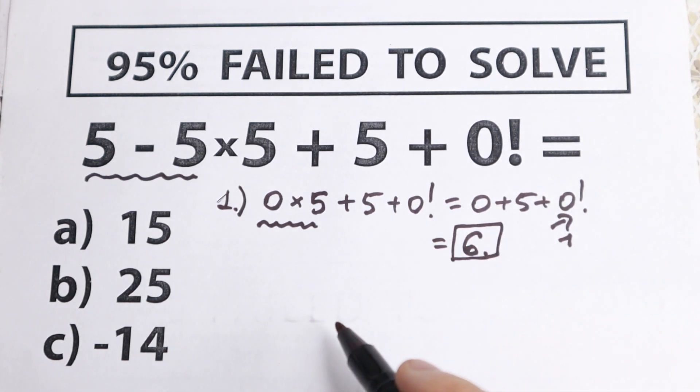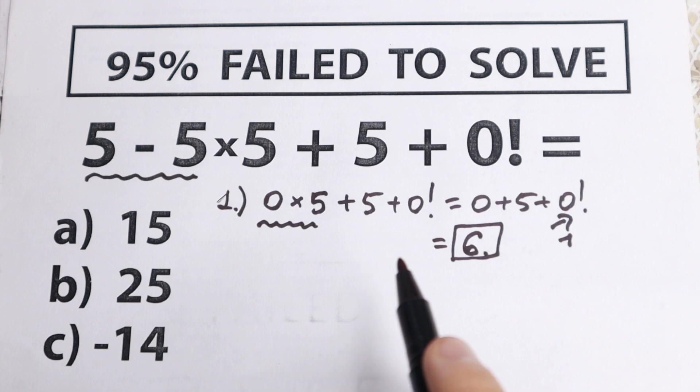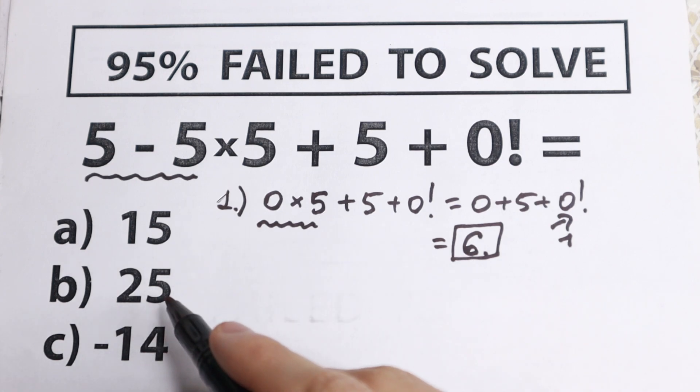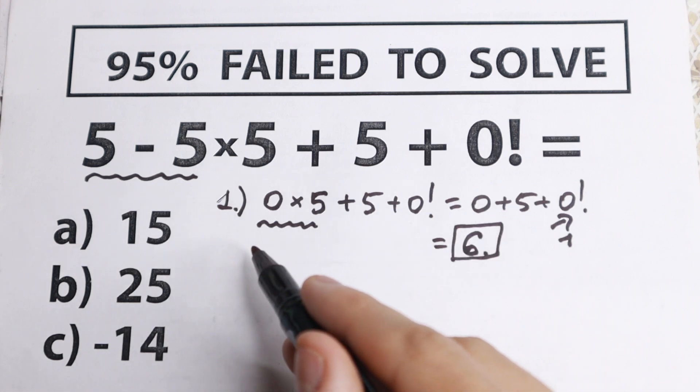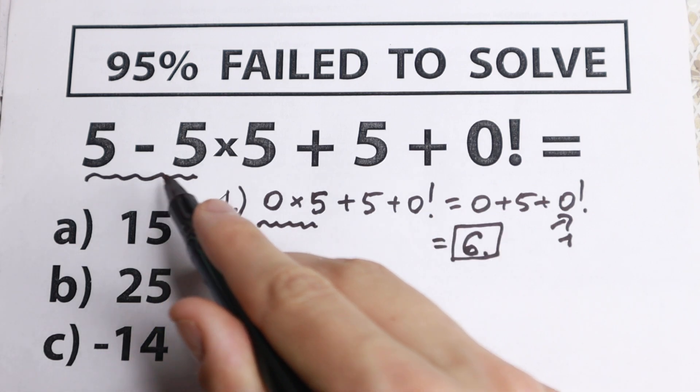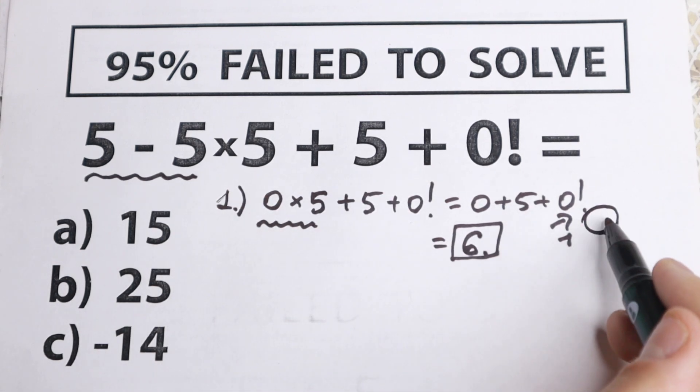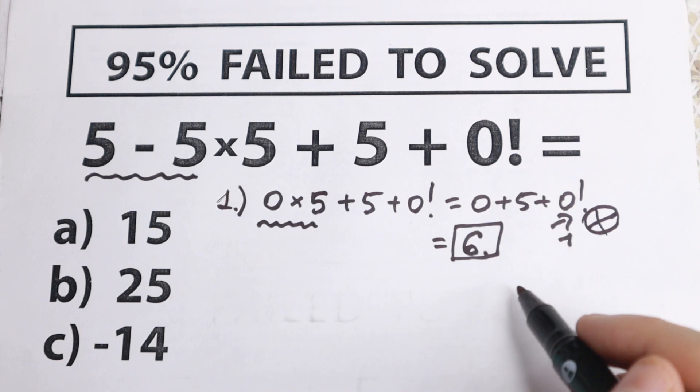As you can see, we found an answer using a wrong way. I wanted to show this wrong way because it's really important. We don't have option 6 because we cannot start with subtraction or addition if we have multiplication and division. This is absolutely incorrect.